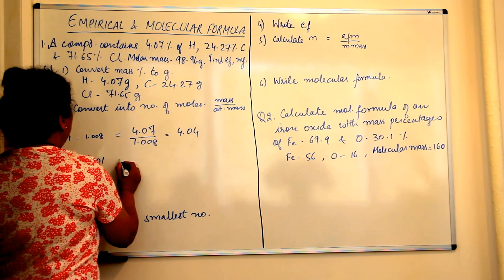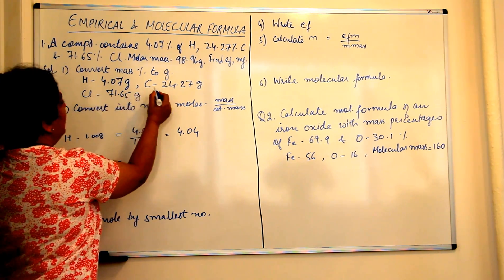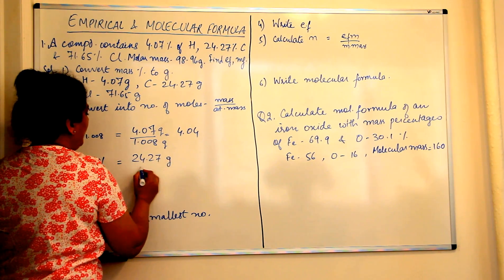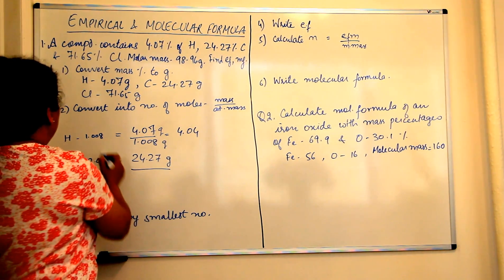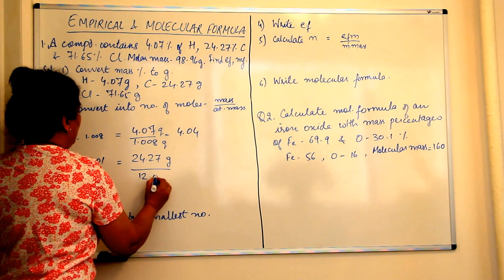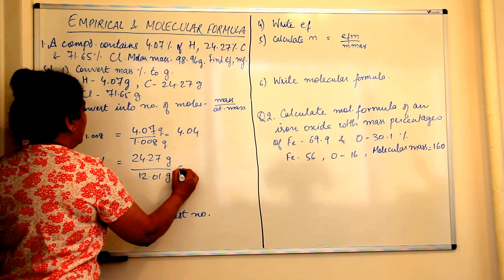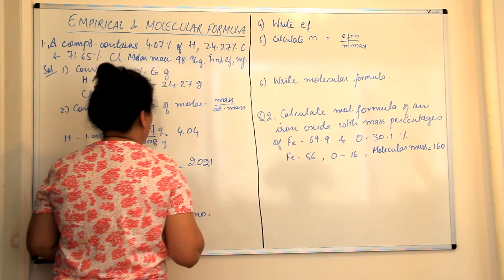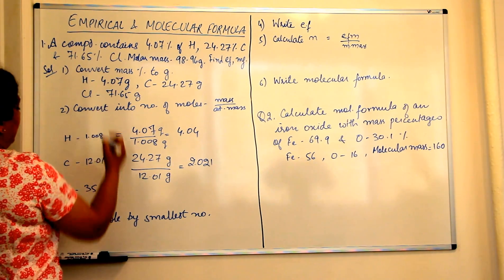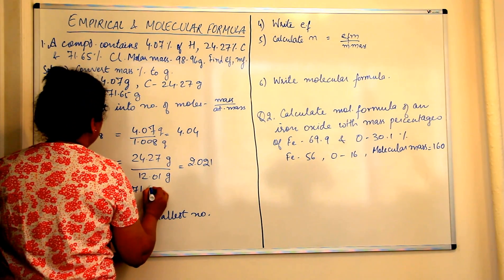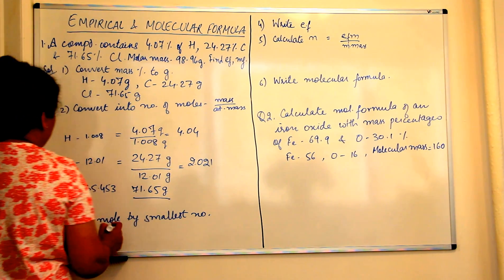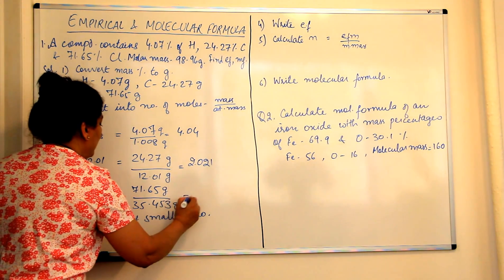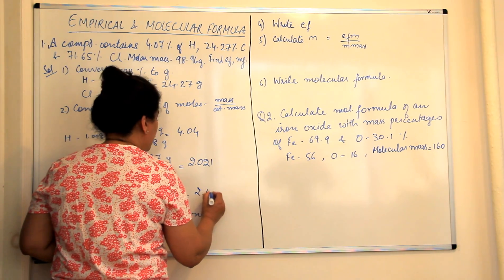Similarly, carbon has an atomic mass of 12.01. We have 24.27 grams of carbon. Dividing by the atomic mass of 12.01 grams gives us 2.021 moles. Similarly, for chlorine, 71.65 grams divided by the molar mass of 35.453 grams also gives 2.021 moles.